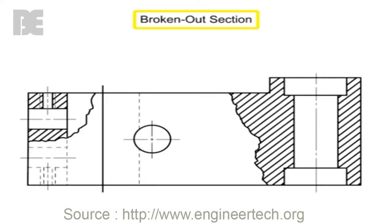Broken out sections are used to show the interior details of a specific feature of the object. A small portion of the part is sectioned to show interior details. A freehand brake line is used in lieu of a cutting plane line to indicate a broken out section.